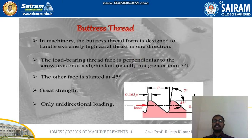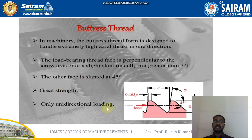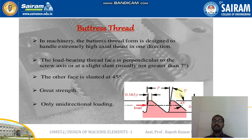Moving to the next type — the buttress thread. In machinery, the buttress thread form is designed to handle extremely high axial thrust in one direction. As you can see, the load-bearing thread faces are perpendicular to the screw axis or at a slight slant, usually not greater than 7 degrees. The other face is slanted at 45 degrees. It provides great strength but only unidirectional loading. The height of this thread is 0.63 times the pitch, and the tooth head surface is 0.163 times the pitch.